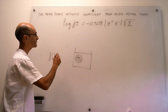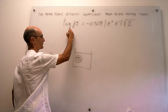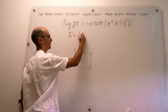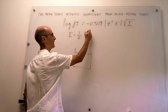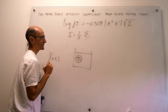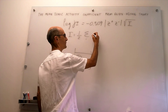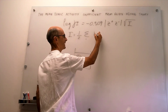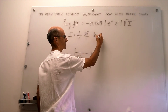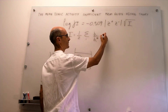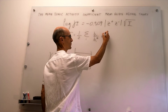The ionic strength I is defined as one half times the sum over all ions in the solution of the molality of that ion divided by the reference molality, multiplied by the charge of the ion squared.